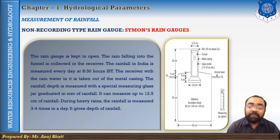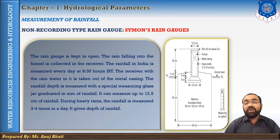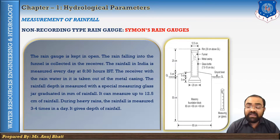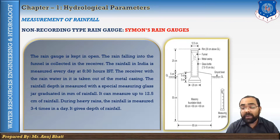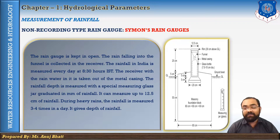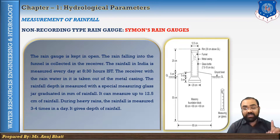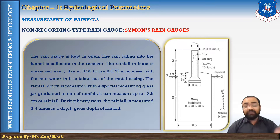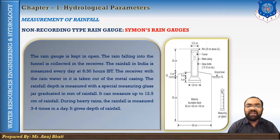The fourth point: the rain gauge should never be situated on the side or top of a hill. If a fence is erected to protect it from cattle, it should be so located that the distance of the fence is not less than twice the height of that fence. So if you want to provide a fence for protection, you have to make sure that the height of the fence and the distance from the rain gauge to the fence should be twice the fence height. These are the criteria whenever you are fixing the rain gauge.